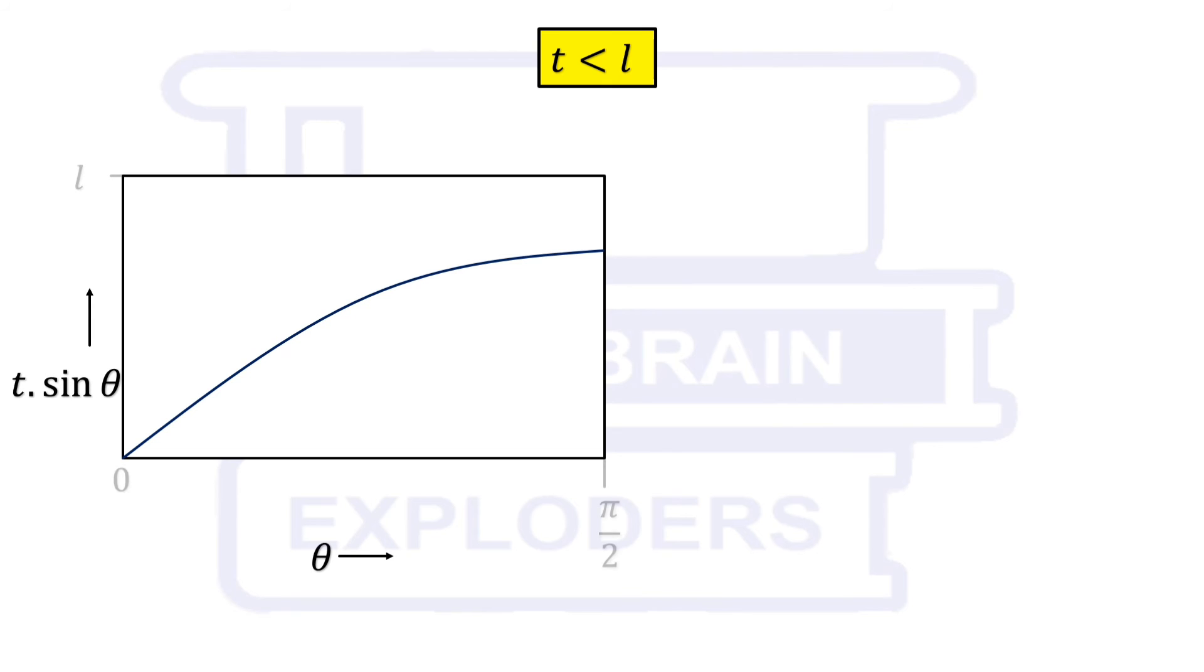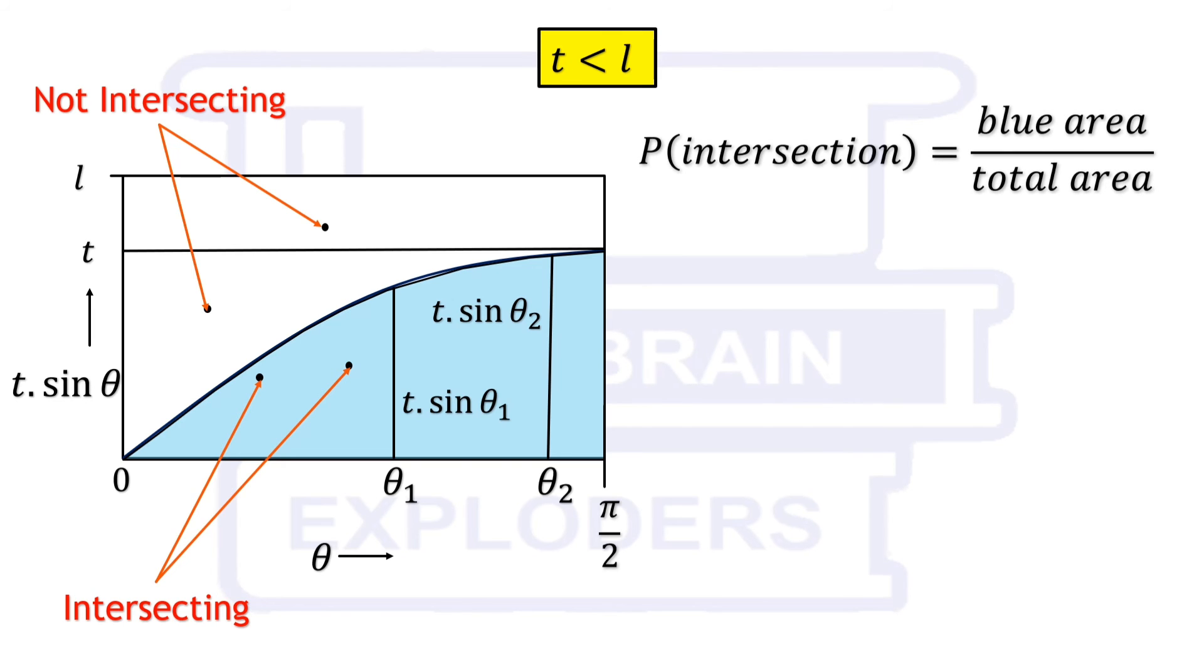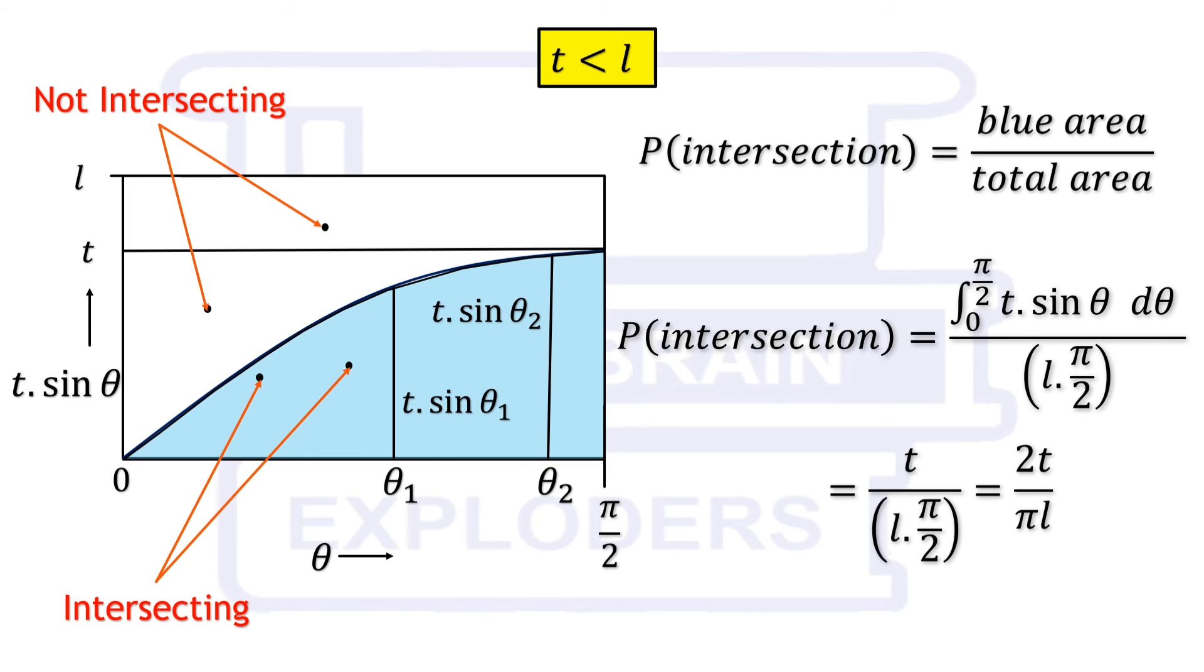So, draw a graph of t sin theta versus theta from 0 to pi by 2. When theta is pi by 2, it means needle is vertical. Remember that when needle was vertical, end point was intersecting for t distance and not intersecting for l-t distance. If theta acquired any other value, say theta1, there is t sin theta1 distance in which if end point lies, needle intersects. This is true for other values of theta also. In this graph, every point is presenting a combination of angle and distance of needle with respect to a parallel line. Condition of the points which are in this blue region are favorable and rest are unfavorable. Probability of intersection becomes blue area over total area that is 2t over pi l.